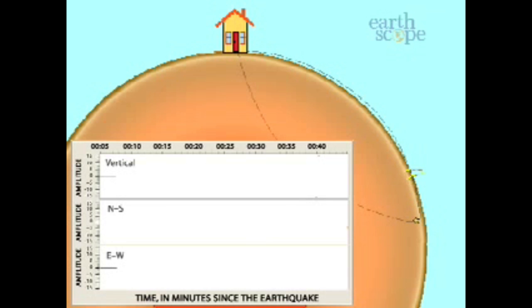P waves cause temporary microscopic deformation to the Earth in the direction the wave is traveling. Thus, energy is primarily recorded on the vertical component of the seismogram, with less energy recorded horizontally.